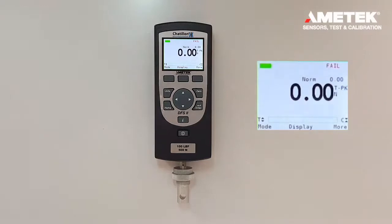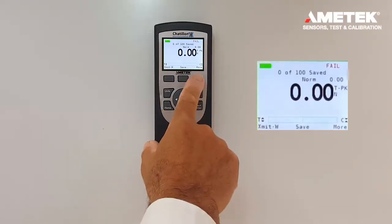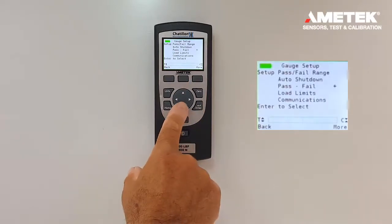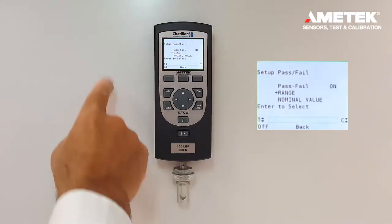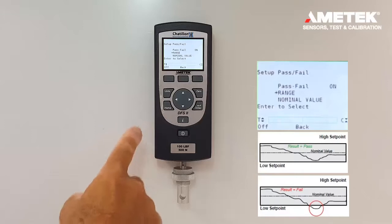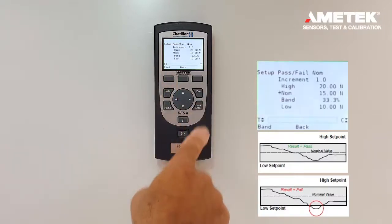Now we're going to change the pass-fail mode from a range to a bandwidth. So we press the more button twice, F3 button, go down to pass-fail enter. Now we're going to go from a range to the nominal value and establish a load band. So we would press the down arrow, nominal load, press the enter button.